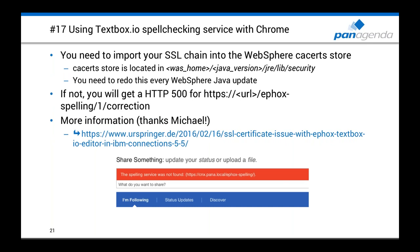Tip 17: TextBox.io spellchecking. If you enable spellchecking with TextBox.io, you'll get an issue with Chrome — for Chrome extension integration you need to put your root certificate or trusted root certificate into the Java certificate store (cacerts) so WebSphere can trust it. Put it in the cacerts store in the Java directory and restart your WebSphere environment. Without it you'll get HTTP 500. Recheck your existing environments for Chrome compatibility. Also note that the cacerts store is part of the Java directory, so after any WebSphere Java update, back up and restore the certificate store.